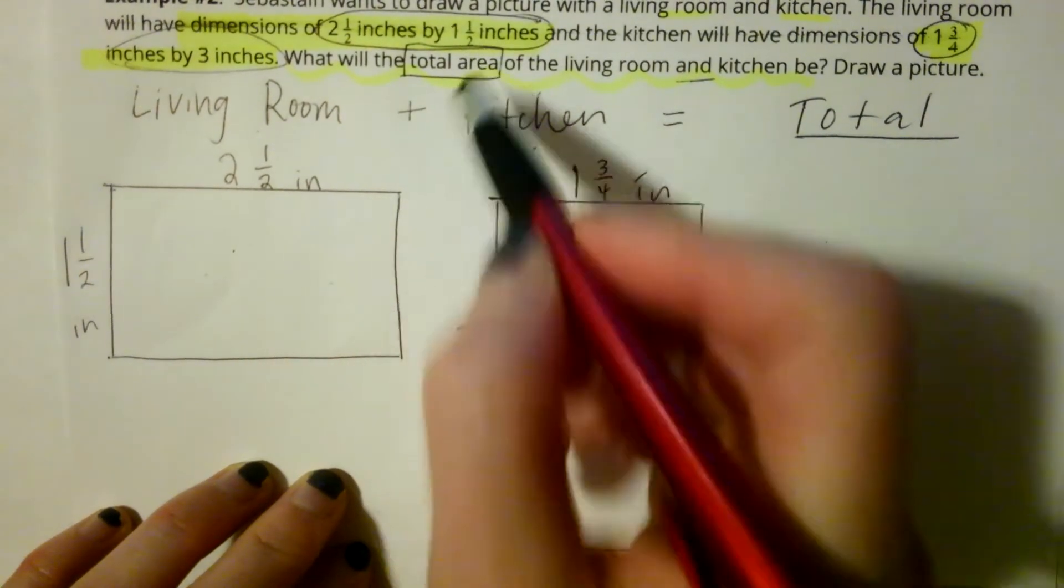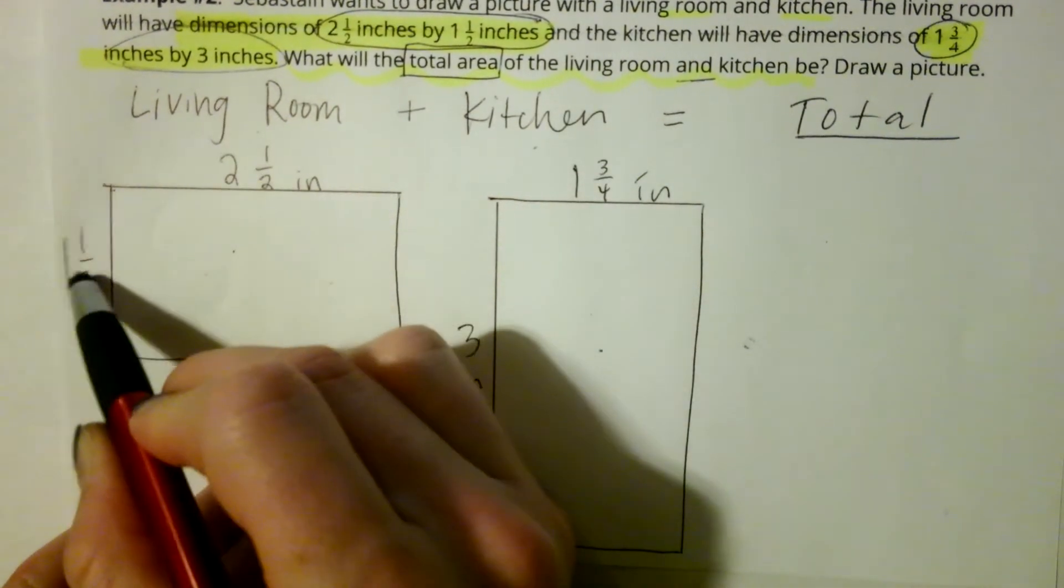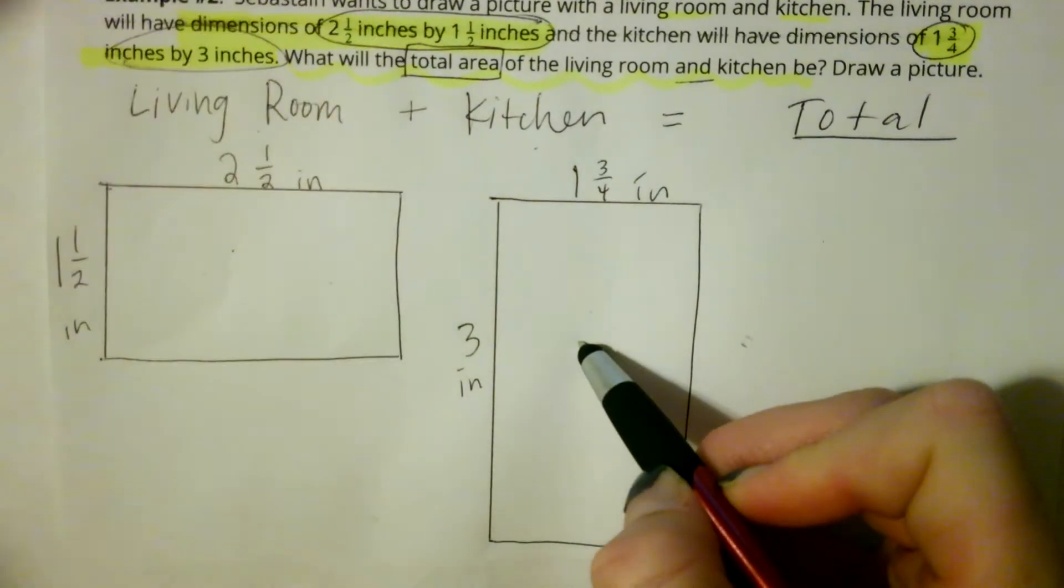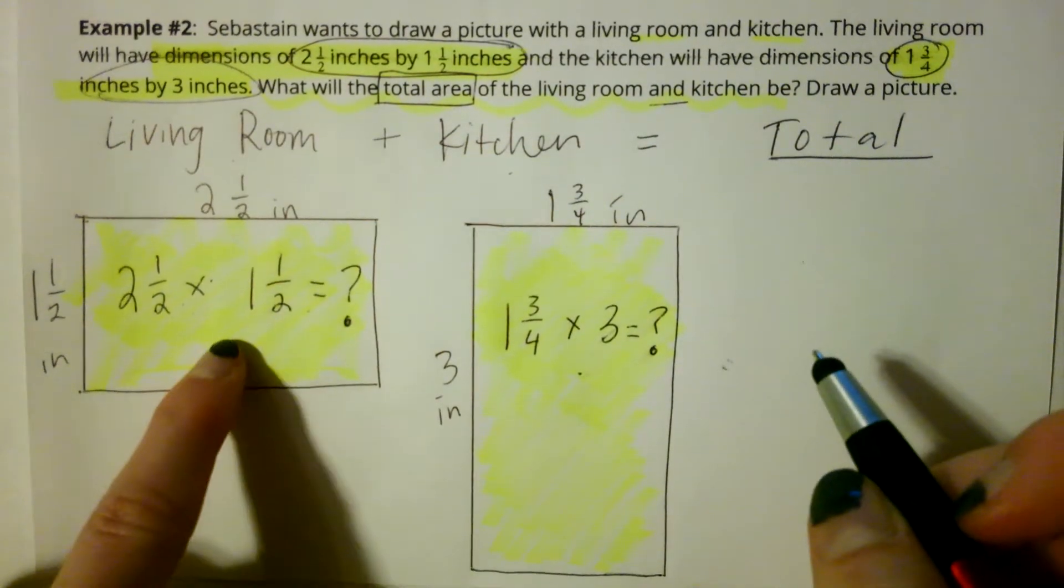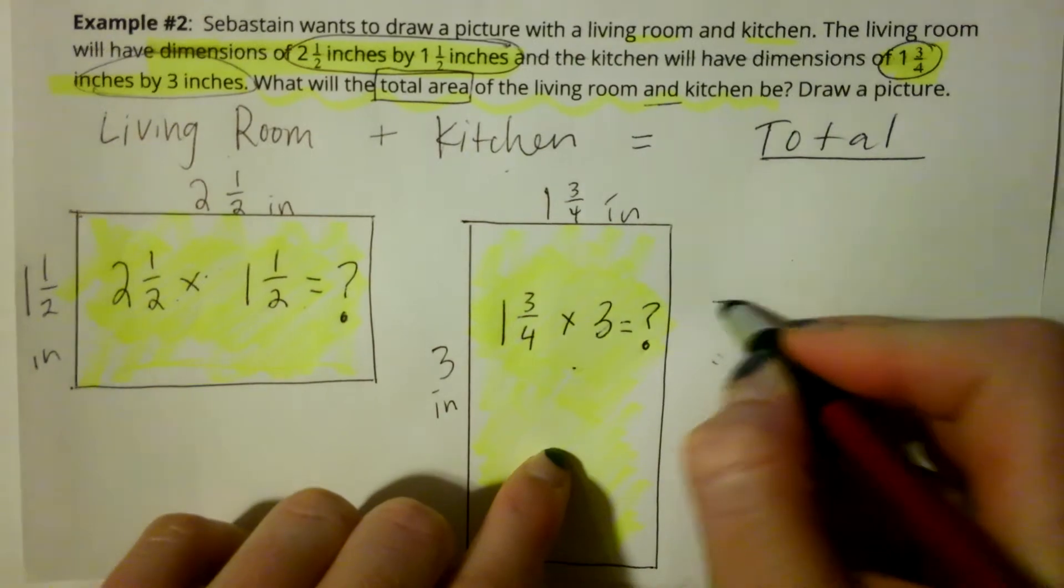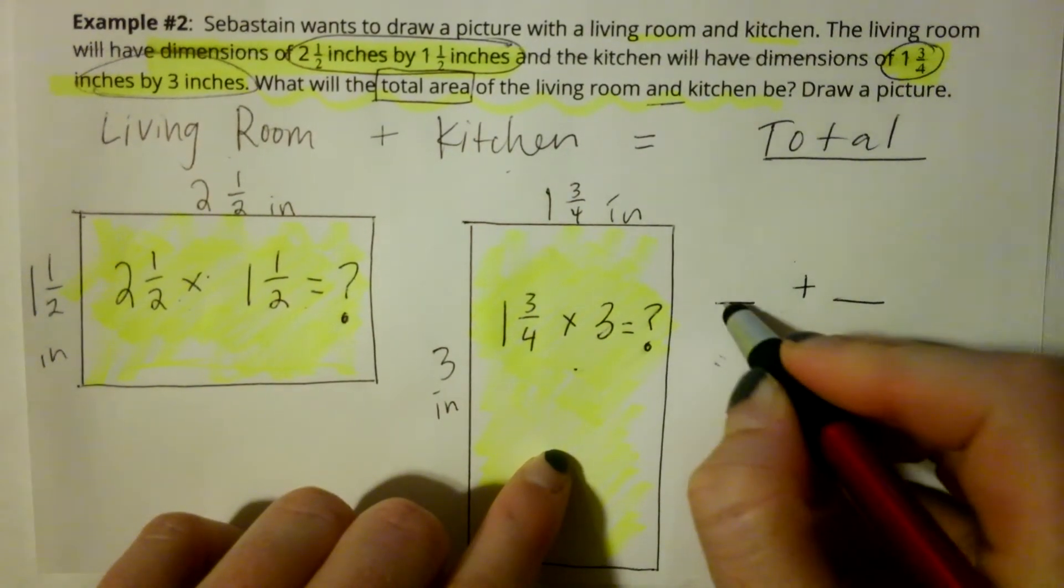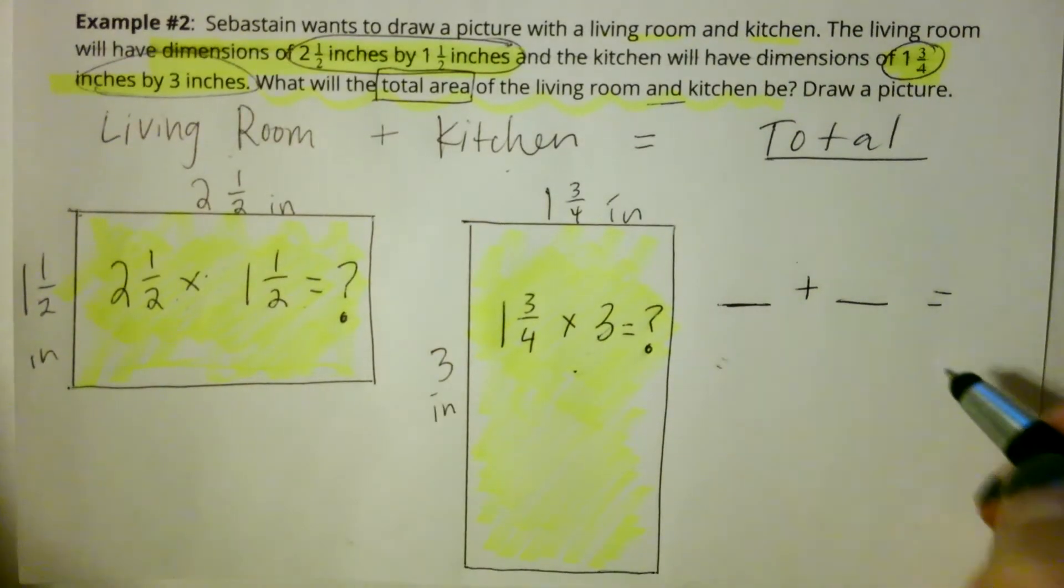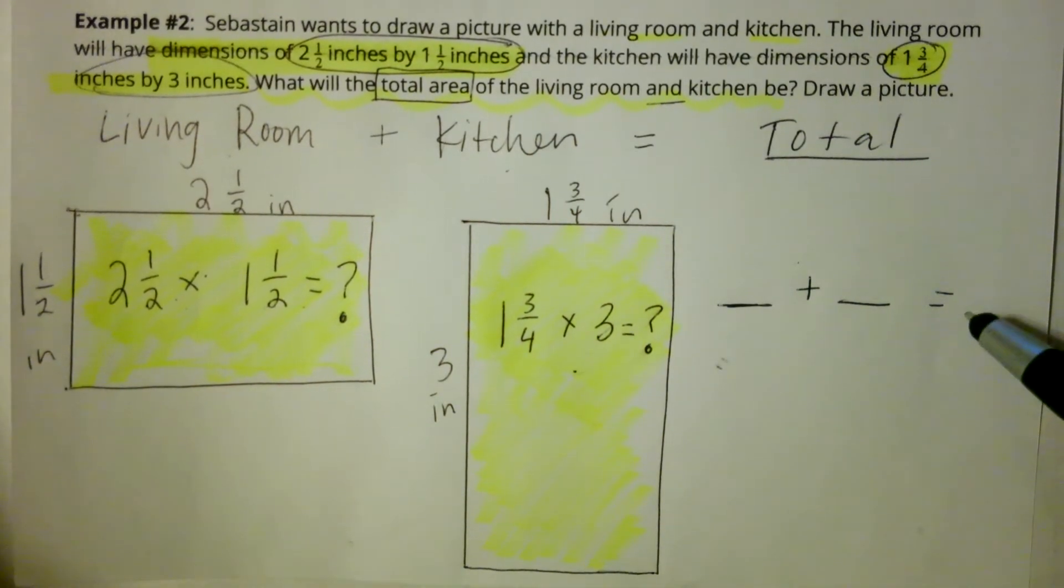I need to find the area of both of these, so I'm going to do length times width and length times width. Your job is to find the area of each of these rooms, and then to find the total, you'll add them together. On the next slide, write this answer that you get for the total area and see if you get it right.